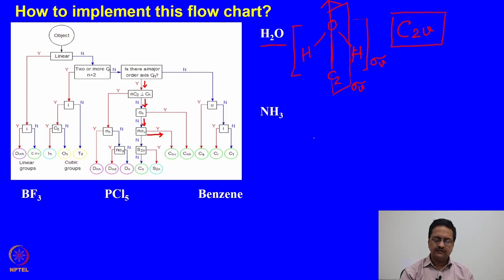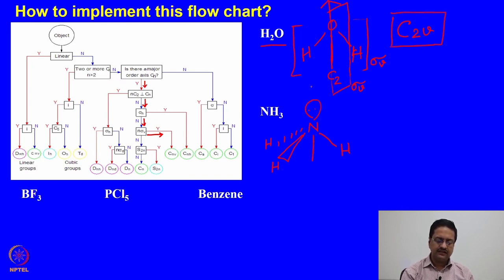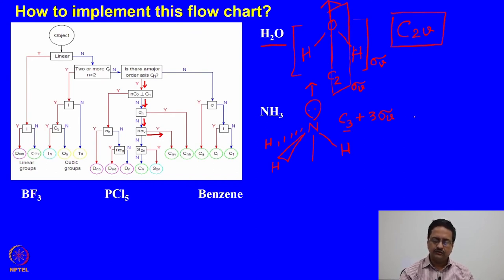Now if I try to find out the point group of ammonia, it should be very simple. Ammonia is a pyramidal-shaped molecule with the lone pair, and in the previous class we understood that it has a C3 and it has 3 sigma v's. It is very similar to water — the only difference is that it has a C3 axis. So the point group of this molecule should be C3v.